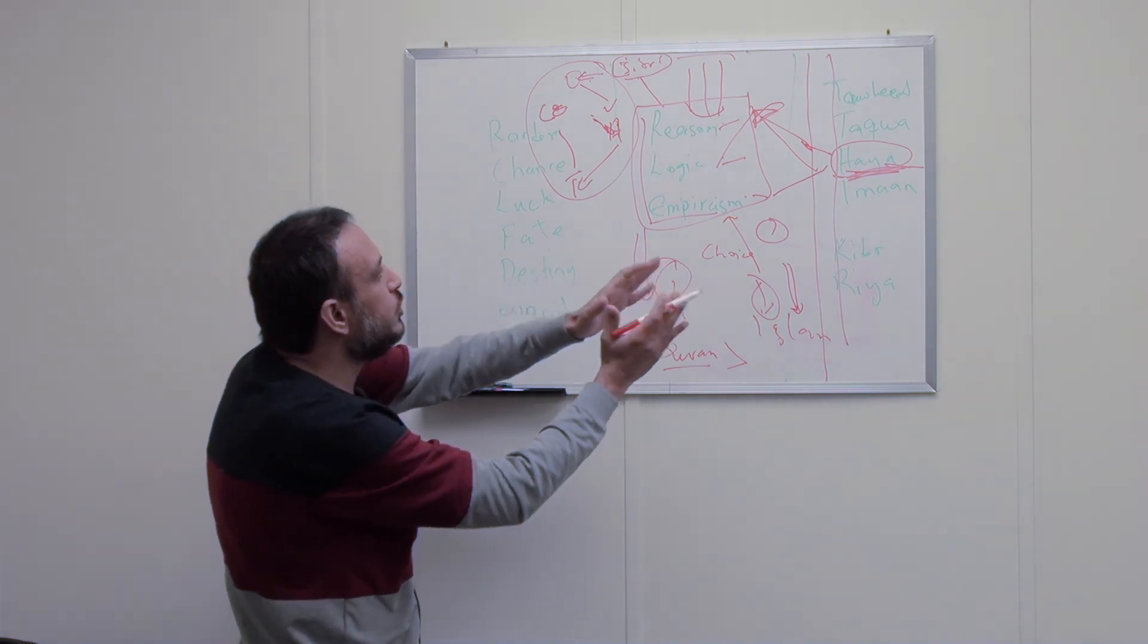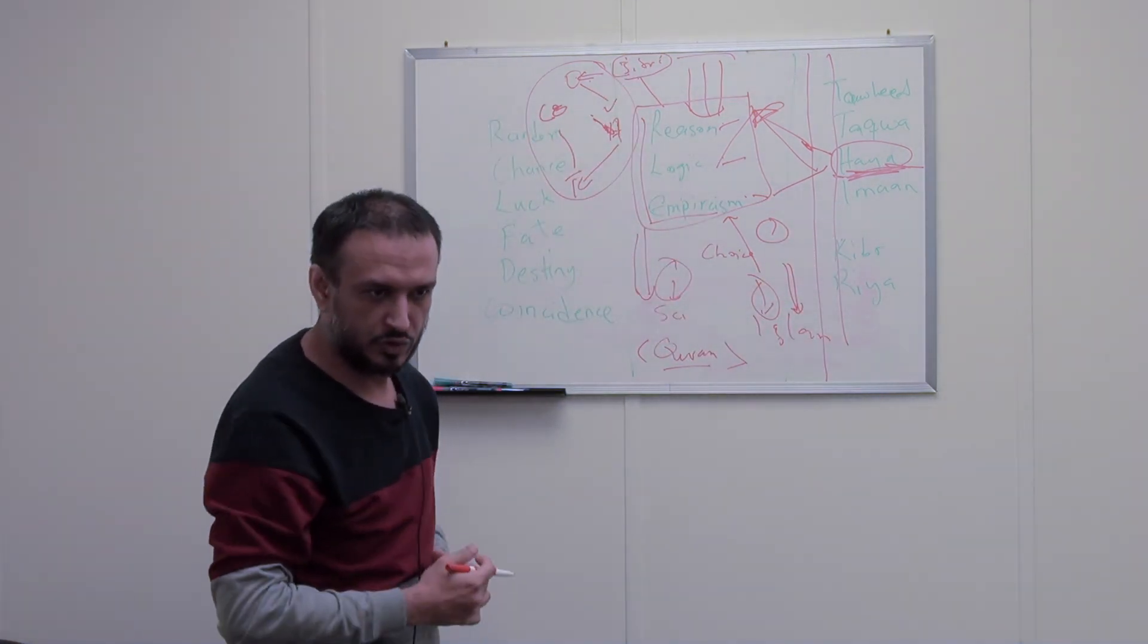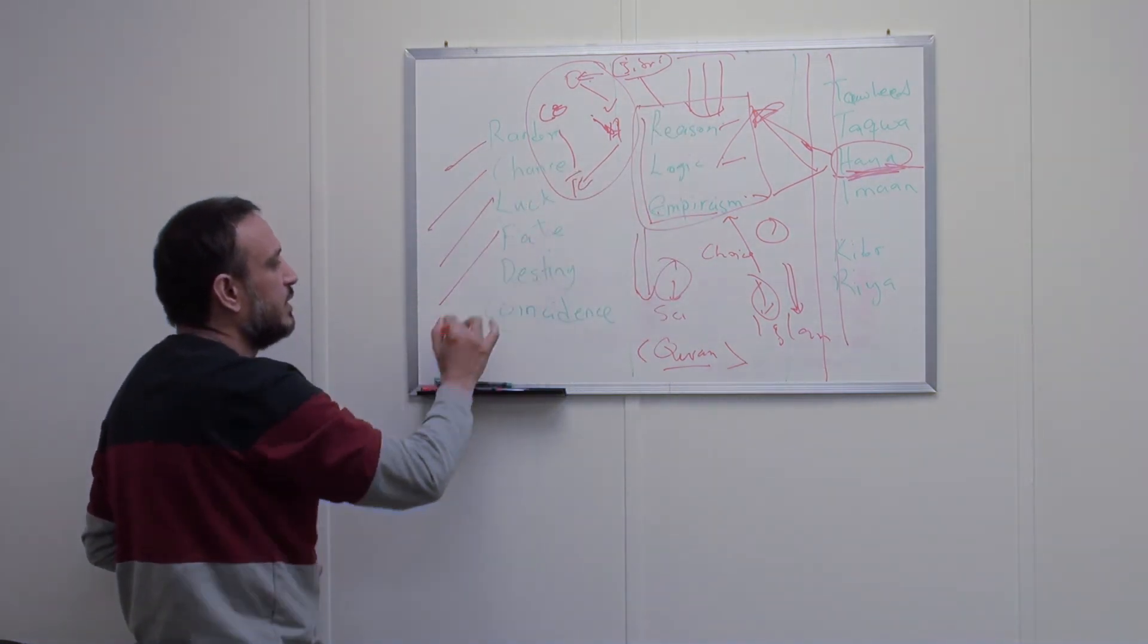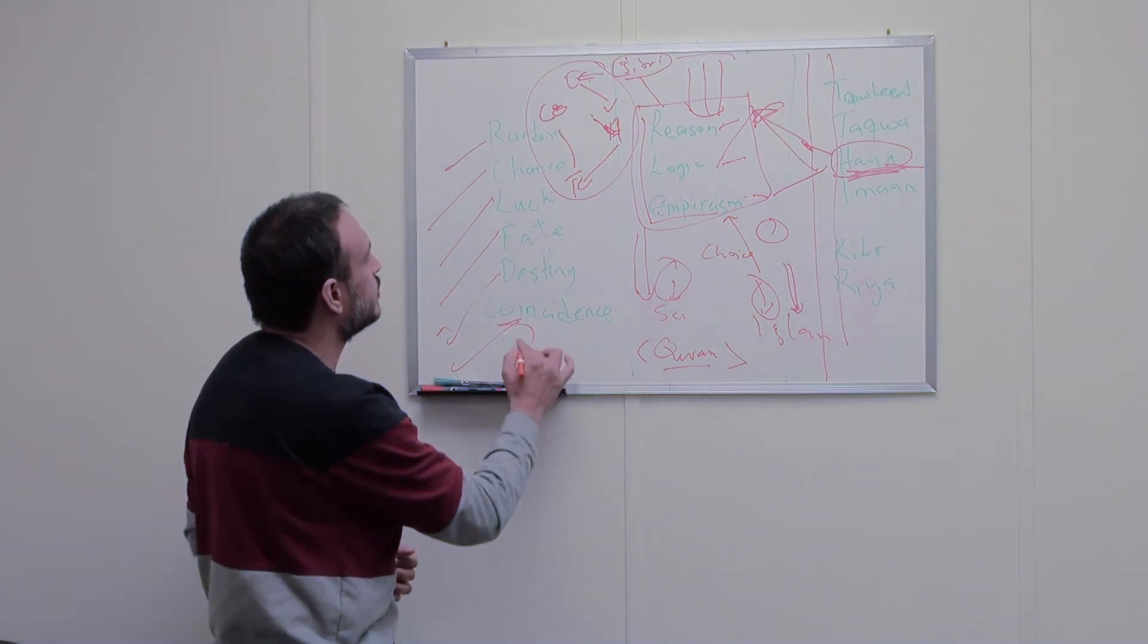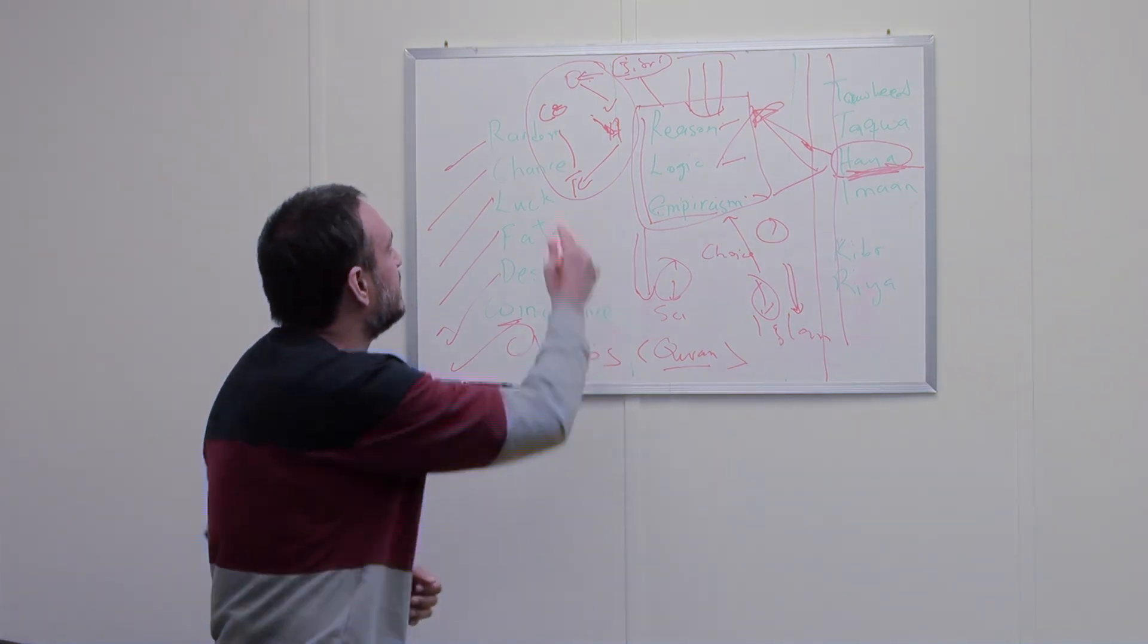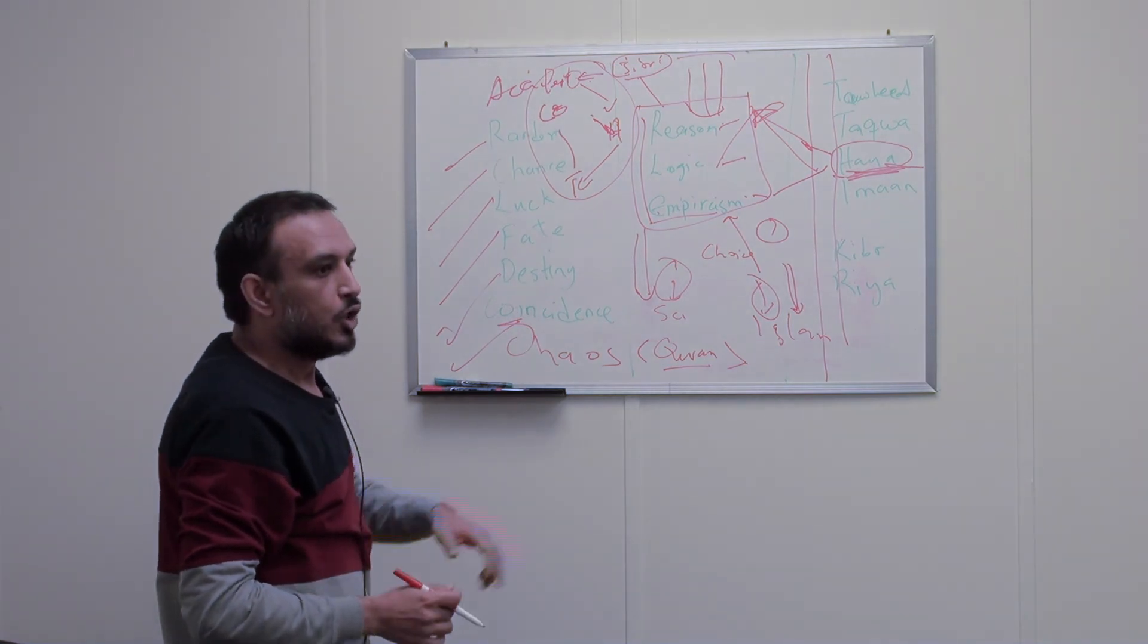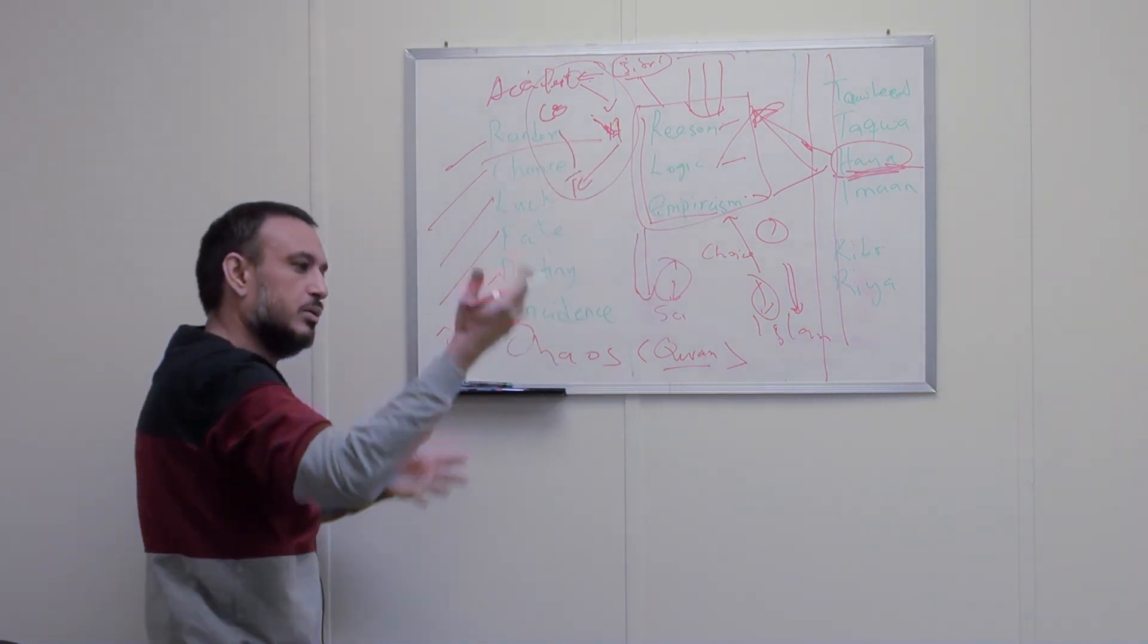When you go outside Islam, especially in the secular system, you are going to use this with randomness, chance, luck, fate, destiny, coincidence. Am I wrong? You can add chaos also here. Accident. To explain why did this happen, it's a random move. Well, it happened.